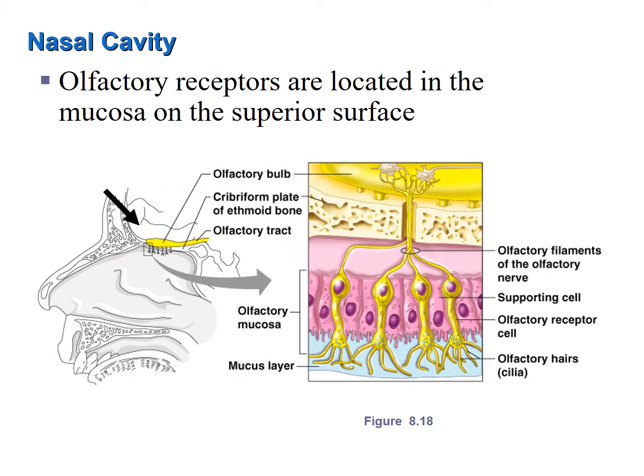Olfactory receptors are located at the most superior portion of the nasal cavity. They detect molecules that embed themselves in the mucus layer and send action potentials to the olfactory bulb and then the brain, which is responsible for our sense of smell. Because these receptors are only in the superior nasal cavity, when we want to smell something such as perfume or a rose, we sniff vigorously to make sure the molecules reach the olfactory receptors.